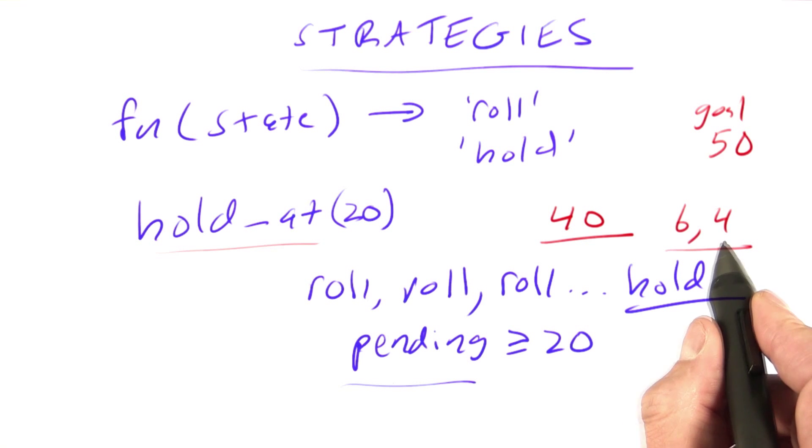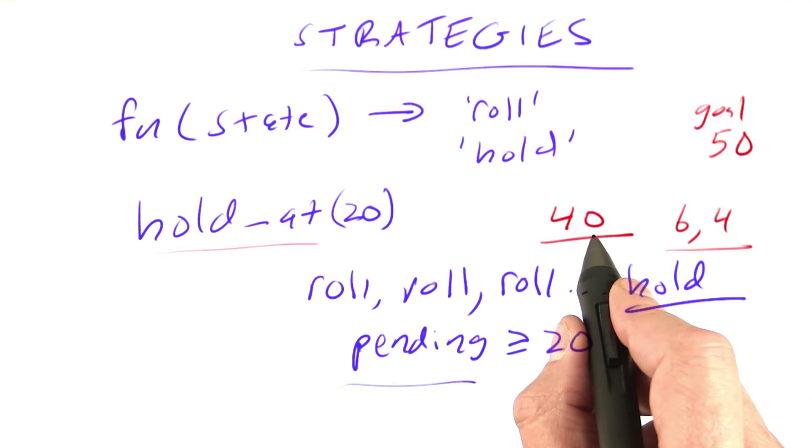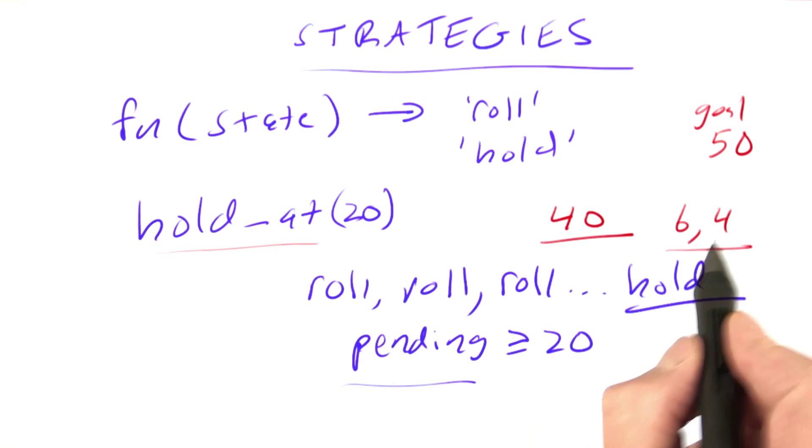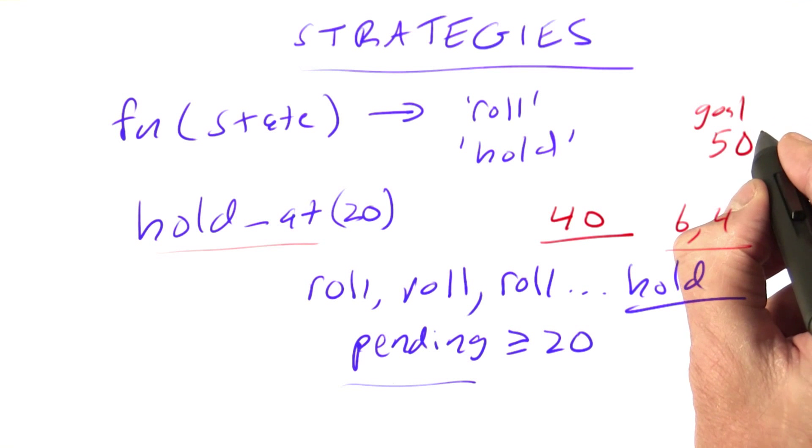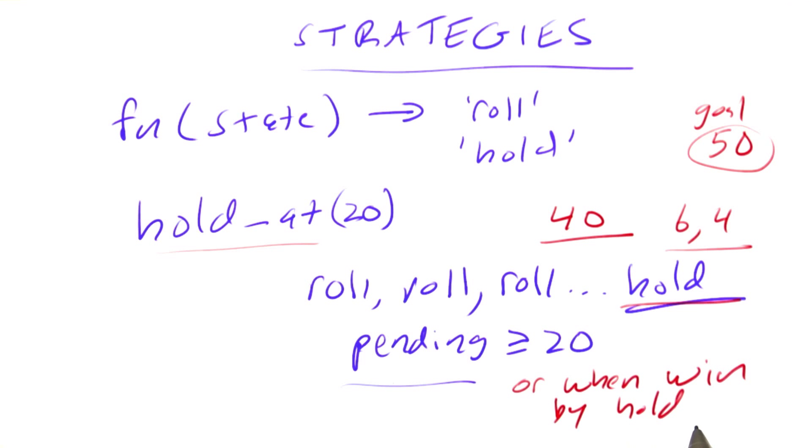I haven't gotten up to 20 yet, but it would be silly for me to keep rolling at that point because I would risk pigging out and only scoring one point and getting to 41, whereas I know if I hold now, I have 40 plus 6 plus 4 is 50, I've already won the game. So hold at 20 will hold when pending is greater than or equal to 20, or when you win by holding.